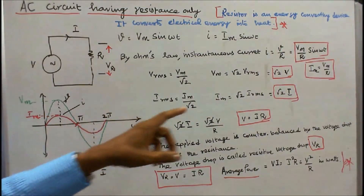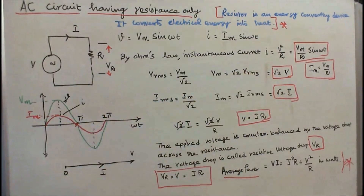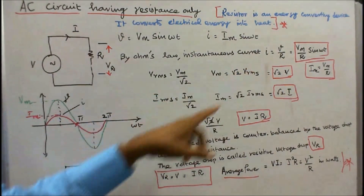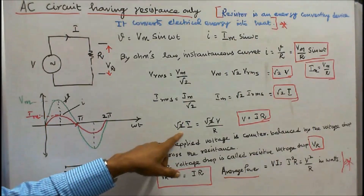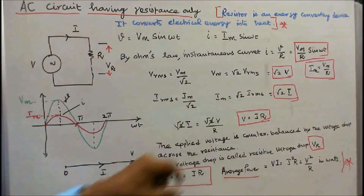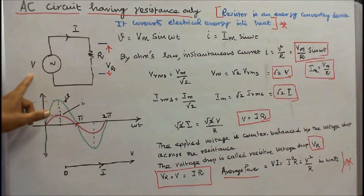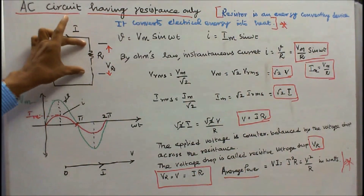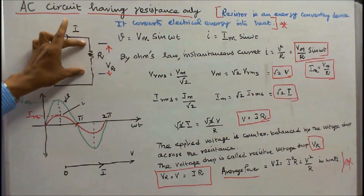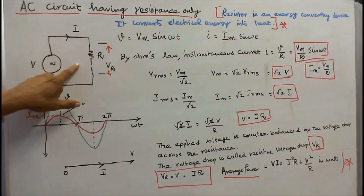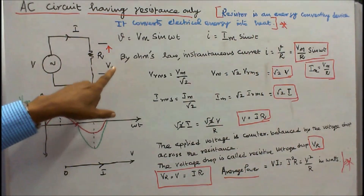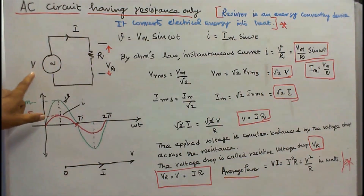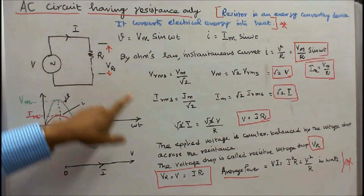We know that Im is equal to Vm/R. Substituting Im = √2 × I, we get √2 × I = √2 × V/R, and the √2 terms cancel, giving V = I × R. The applied voltage is counterbalanced by the voltage drop across the resistor, which is called the resistive voltage drop V_R. Therefore V equals the resistive voltage drop, which equals I × R.